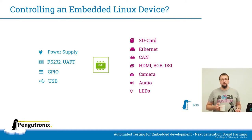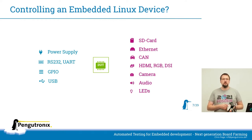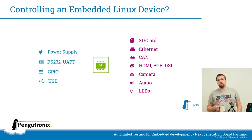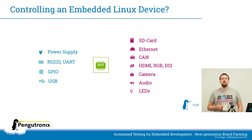Depending on the use case of your device, you may have other interfaces. You may need to interface with an SD card, an Ethernet port for connectivity, CAN buses if you're doing automotive or automation, HDMI, DSI or camera interfaces if you're doing graphics, and audio input or output, or some LEDs to show your current state.